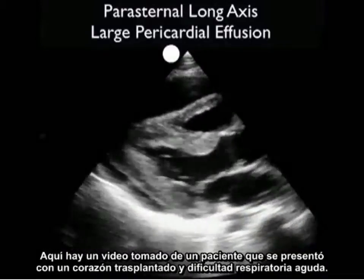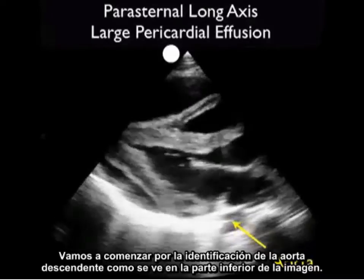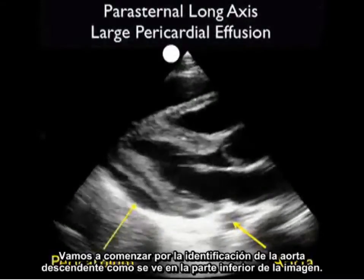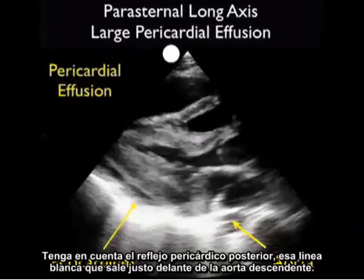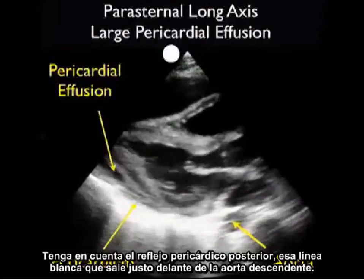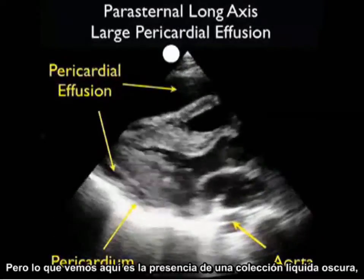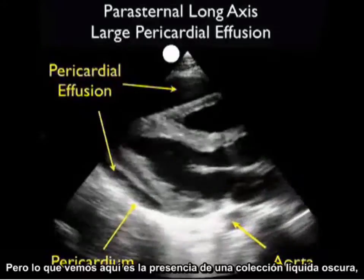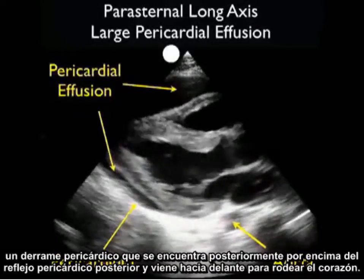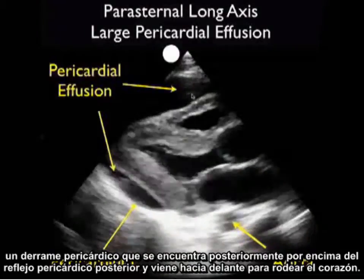Here's a clip taken from a patient who presented with a transplanted heart and acute shortness of breath. We'll begin by identifying the descending aorta at the bottom part of the picture, then note the posterior pericardial reflection — that white line coming off just anterior to the descending aorta. What we see here is the presence of a dark fluid collection, a pericardial effusion that layers out posteriorly above the posterior pericardial reflection.